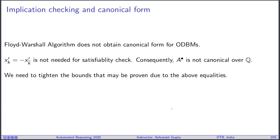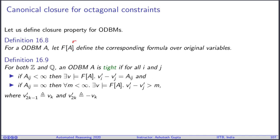To achieve the canonical form, we need to tighten the bounds that may prove the above equalities. Let us define a formula corresponding to a matrix. The corresponding formula is that you write them into the original variables.